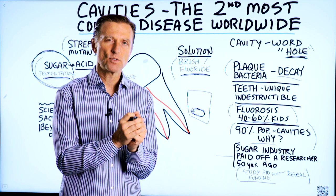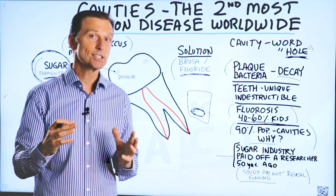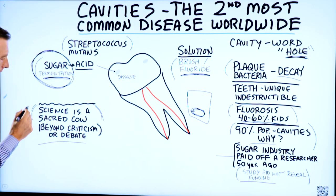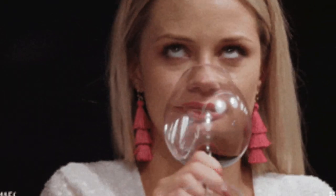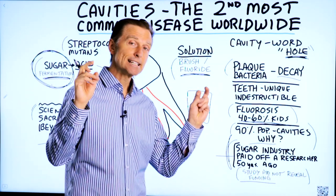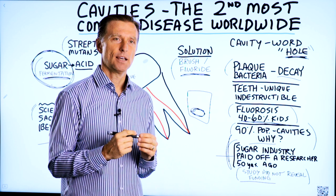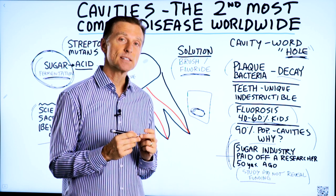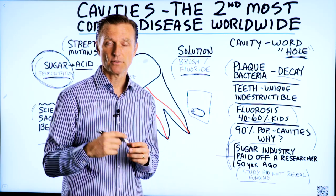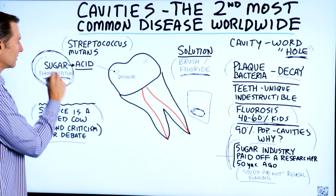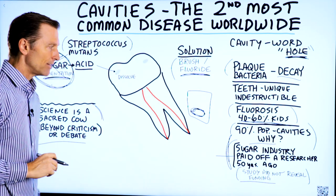It's quite interesting how much corruption is still going on with so-called science. Science is treated as a sacred cow — beyond criticism, beyond debate. But there is massive corruption going on, and so many scientific concepts end up being proven false 30, 40, 50, or 60 years later. So if you have kids, or you're a kid watching this, just cut out the sugar and you'll cut out the cavities. Very simple.